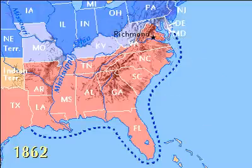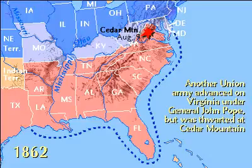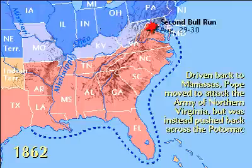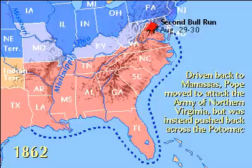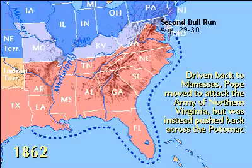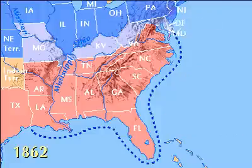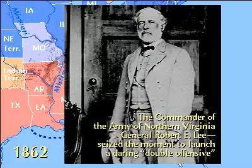Another Union Army under General John Pope was defeated at Cedar Mountain in Virginia. Driven back to Manassas, Pope attacked the Army of North Virginia in the Second Battle of Bull Run, but was pushed back across the Potomac. General Robert E. Lee had driven the Union out of Virginia.